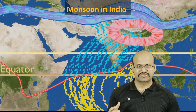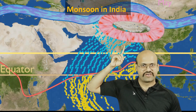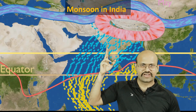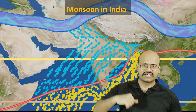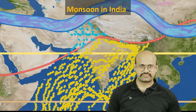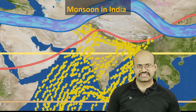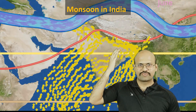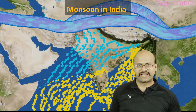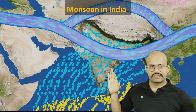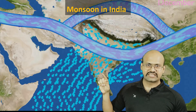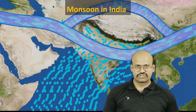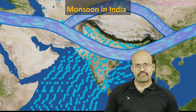Once disrupted, jet streams flow only in the northern direction with no jet stream over the subcontinent. The high pressure region is removed, and monsoon winds rapidly enter the Indian subcontinent, bringing rain to India. In September, jet streams return to their original position south of the Himalayas, wind flows from the Himalayas towards the Indian Ocean, forming retreating monsoon winds that bring rain to the southern peninsula, including regions like Chennai.